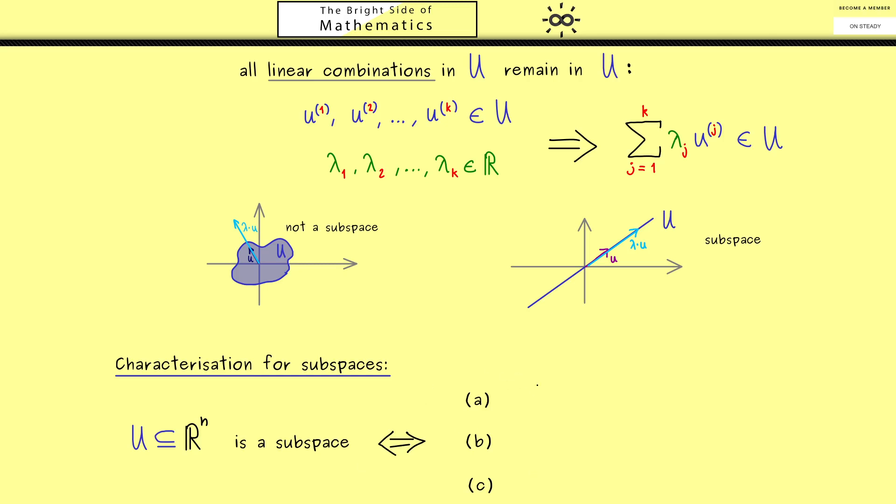Now the first one is that the zero vector from Rn is in U. From the definition this is not hard to see, because you can choose zero for all scalars and then this linear combination would be the zero vector. So you see this is an important property you can immediately check. In other words, if you see that zero is not an element of the subset, you can immediately conclude that U is not a subspace.